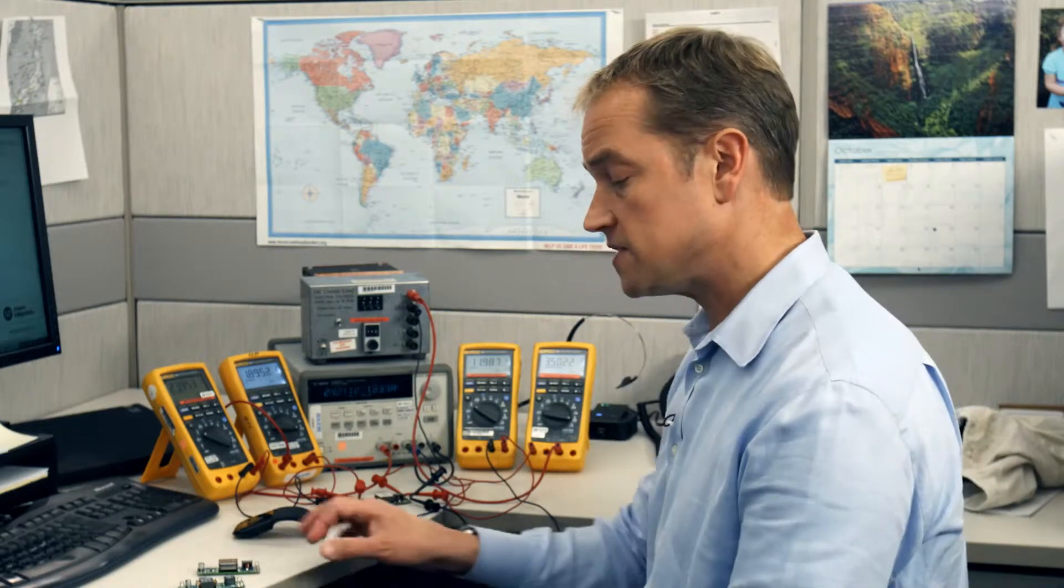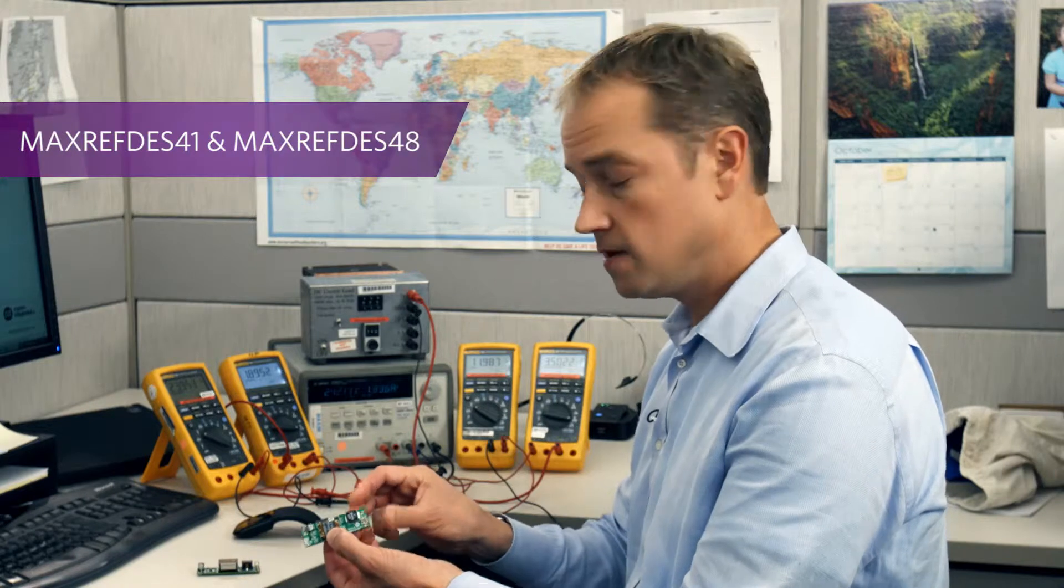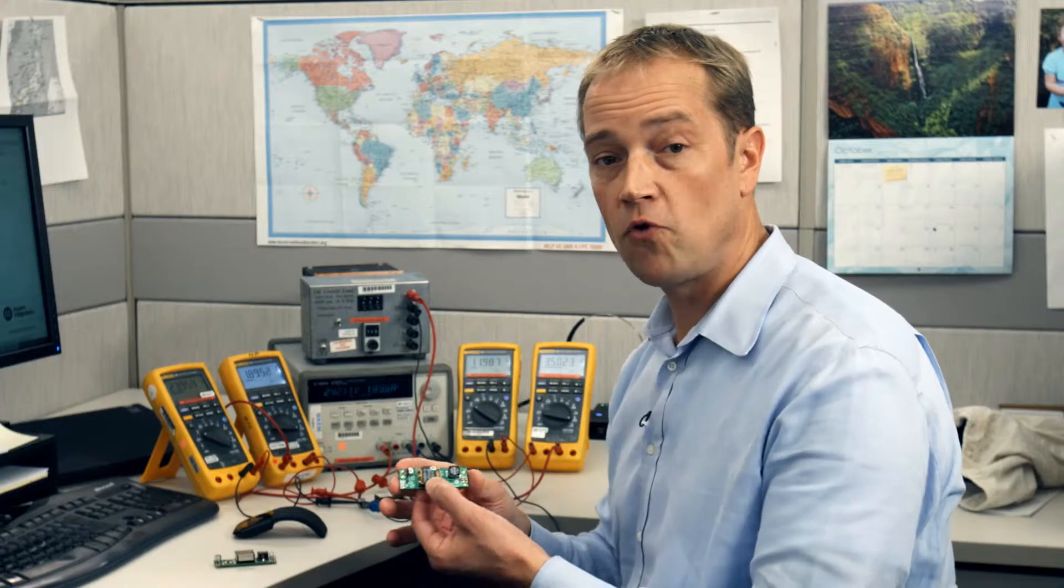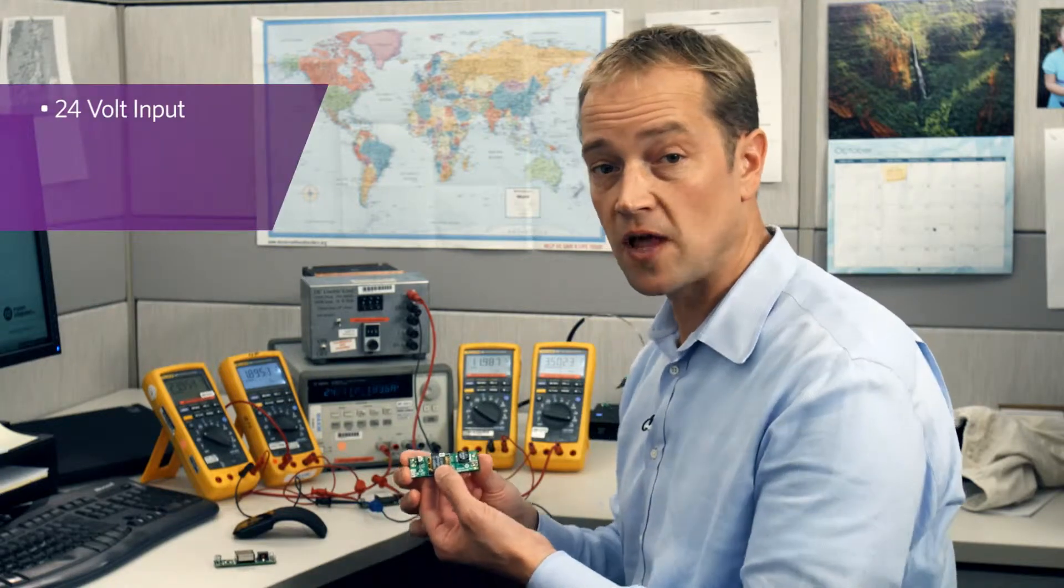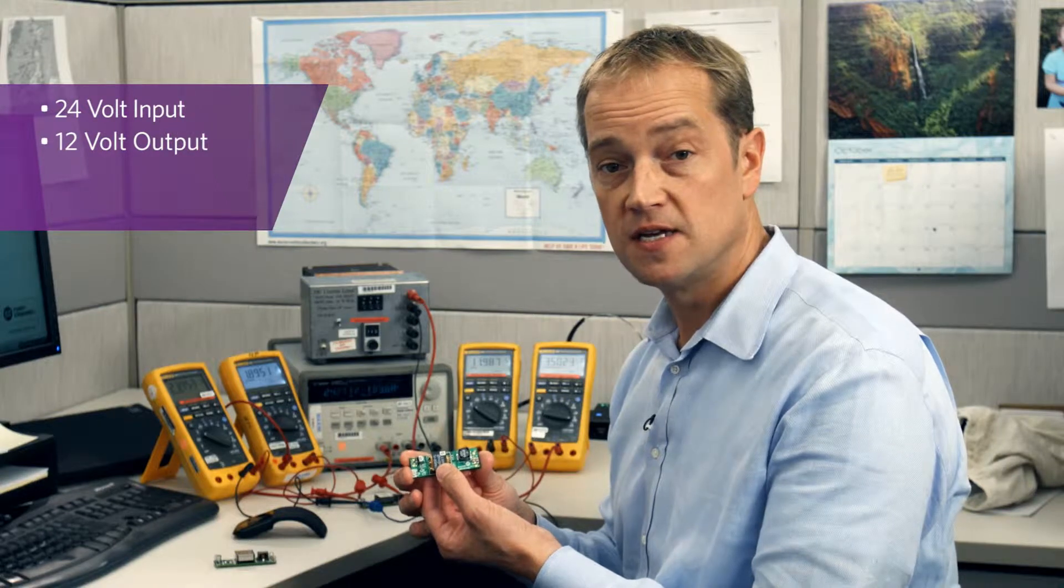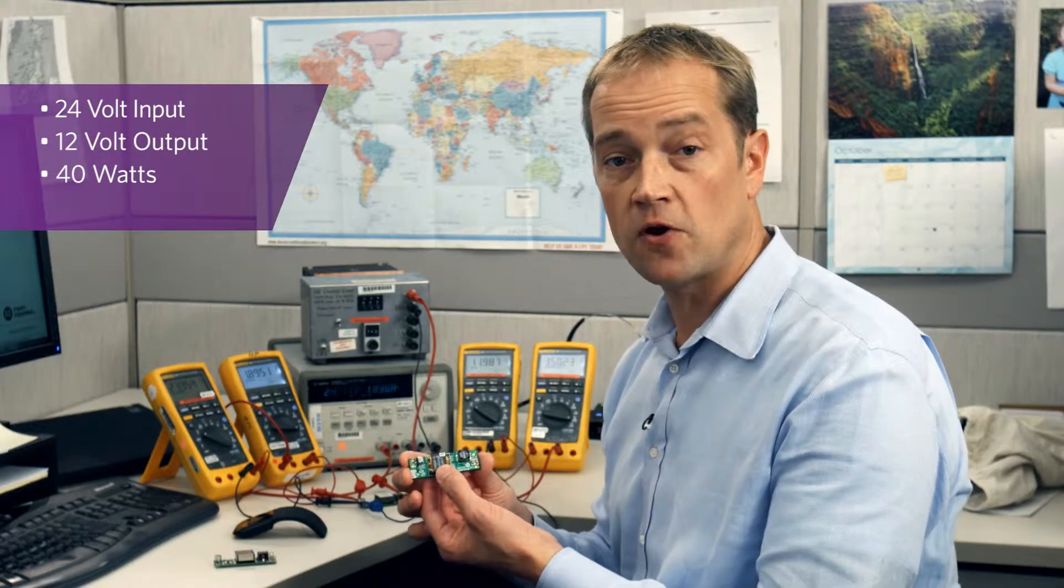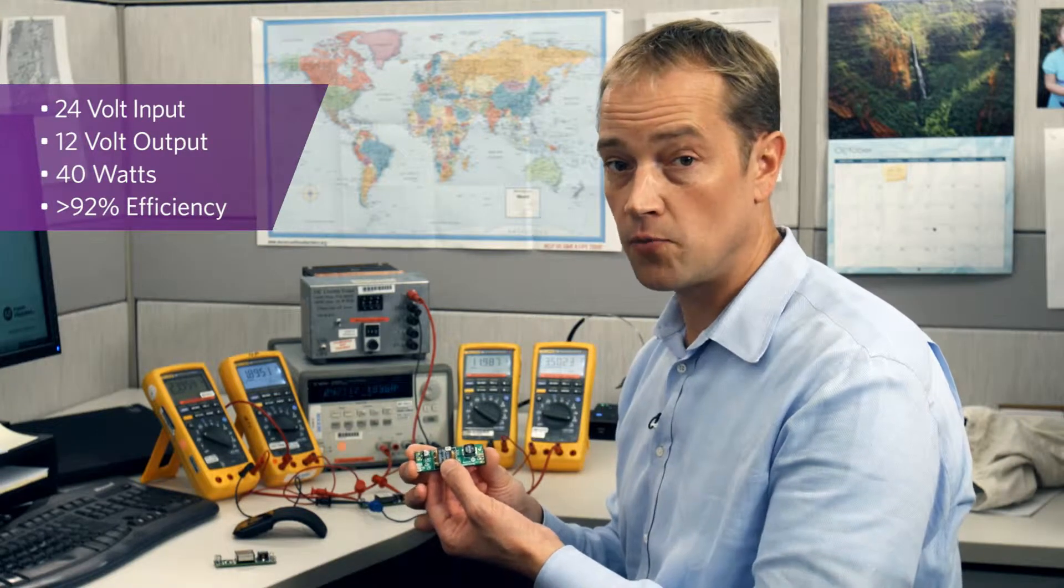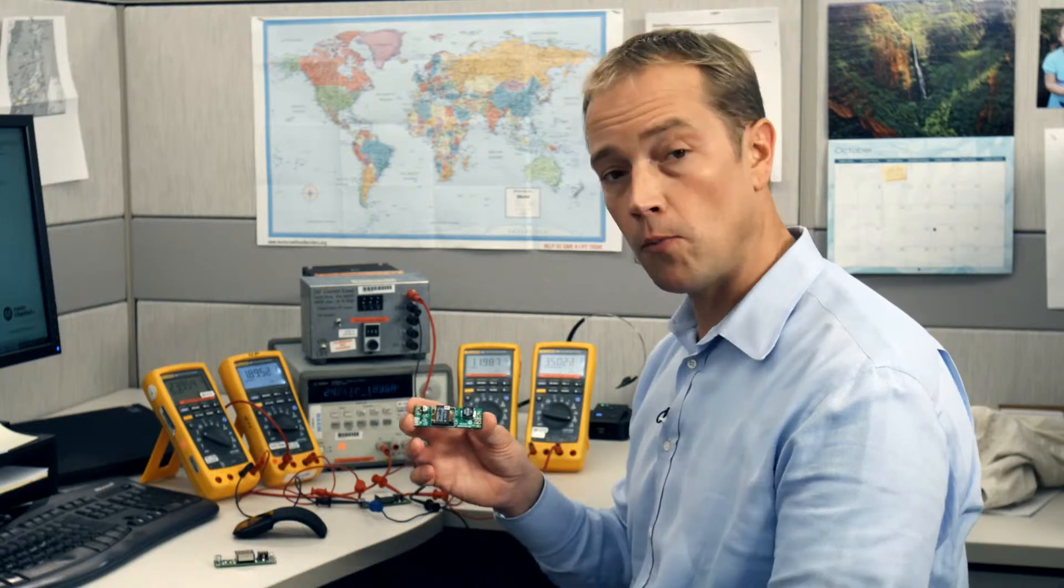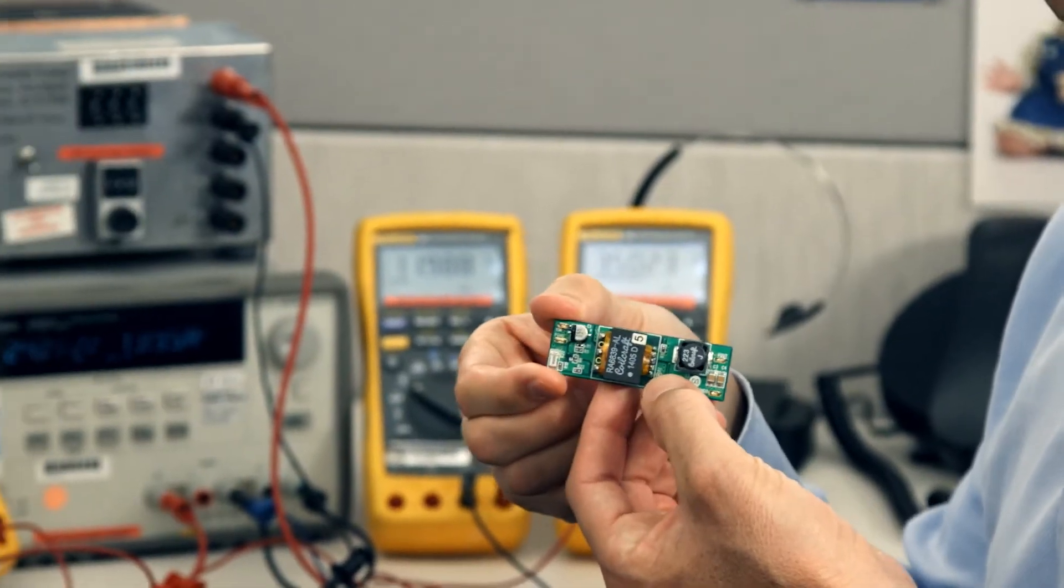The first two reference designs are fairly similar: MaxRefDes 41 and MaxRefDes 48. These are both 24-volt input active clamp DC-DC converters with 12-volt outputs that operate at 40 watts. They both run very efficiently above 92% with a broad, flat efficiency curve. They also fit on a very small board space, which is 70 millimeters wide by 22 millimeters high.